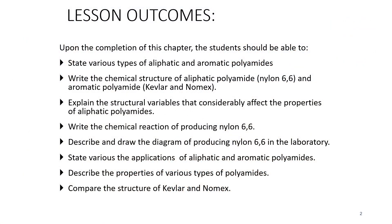Look at the lesson outcomes first. Upon the completion of this chapter, students should be able to state the various types of aliphatic and aromatic polyamide. We have two types of polyamide, which are aliphatic and aromatic. You also need to write the chemical structure of both aliphatic and aromatic. Explain the structural variables that considerably affect the properties of aliphatic polyamide. Write the chemical reaction of producing nylon C6. You need to draw the diagram of producing nylon C6 in the lab. State the various applications of aliphatic and aromatic polyamide.